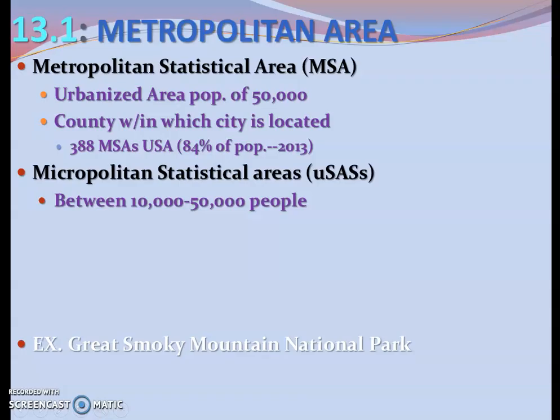Two important definitions: MSA and micropolitan. The Metropolitan Statistical Area, or MSA, is an urban area with a population of at least 50,000. In the United States we have over 300 of those, and more than 84 percent of our population lives in what's called an MSA. This is very important for the census and for tracking population by state, since it's tied to districts, voting, and elections. Micropolitan simply means anything below 50,000.